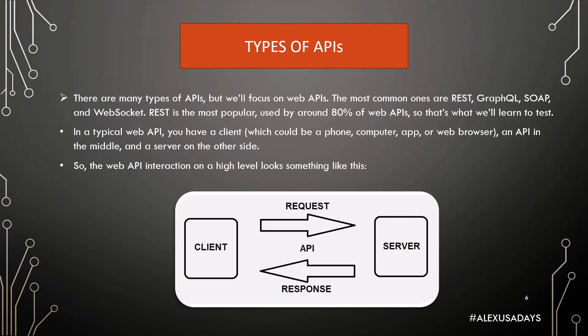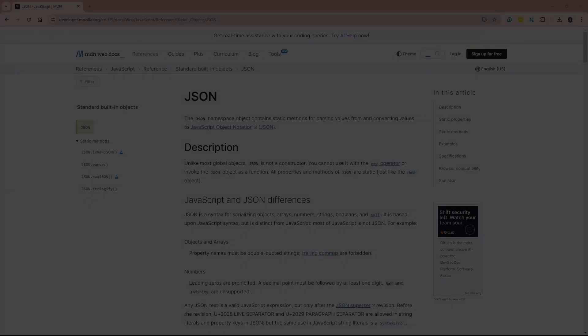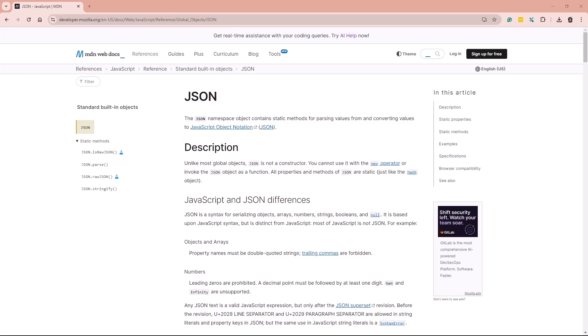The web API interaction on a high level looks something like this: you have a client, it sends an API request, the request goes to the server, the server processes the request, and then sends the API response back to your client. Your client processes it, and then you have some information displayed on your application. Let's have a quick example of API interaction in real life.